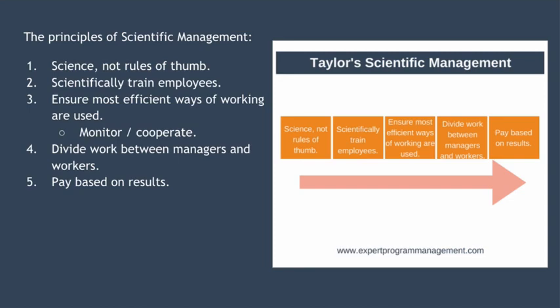The third principle is to ensure the most efficient ways of working are being used, and there are two parts to this. The first is to monitor worker production to ensure they are efficient. The second part is to cooperate — that means working with employees to retrain and recalibrate them so they are exactly following the most efficient way to perform their job. One consequence of this was that organizational structures had to change. Rather than a factory having one single foreman, Taylor advocated several, each specifically focused on efficiency for a particular area of the factory. The aim was to maximize production and eliminate soldiering.